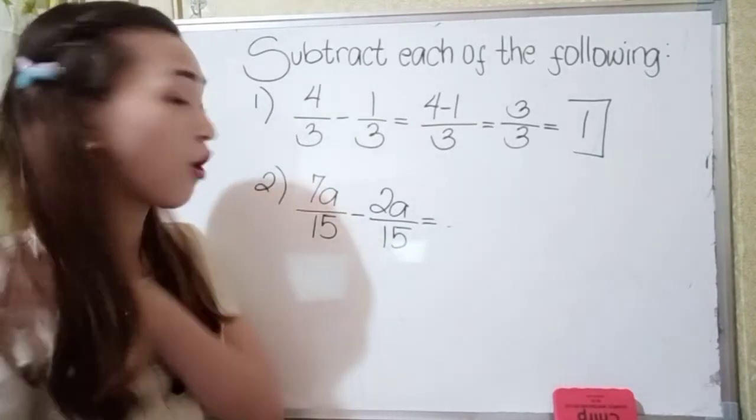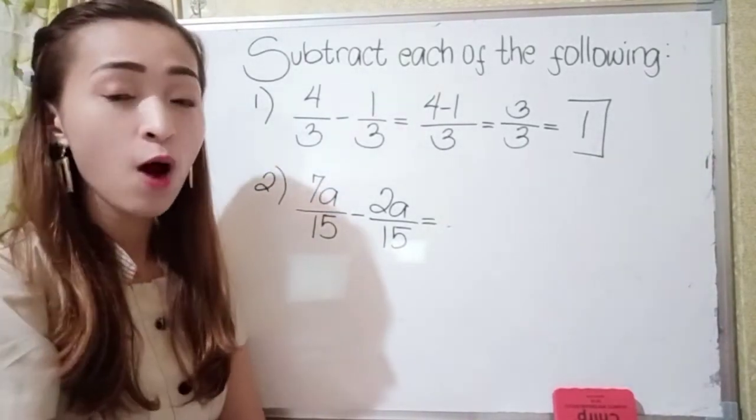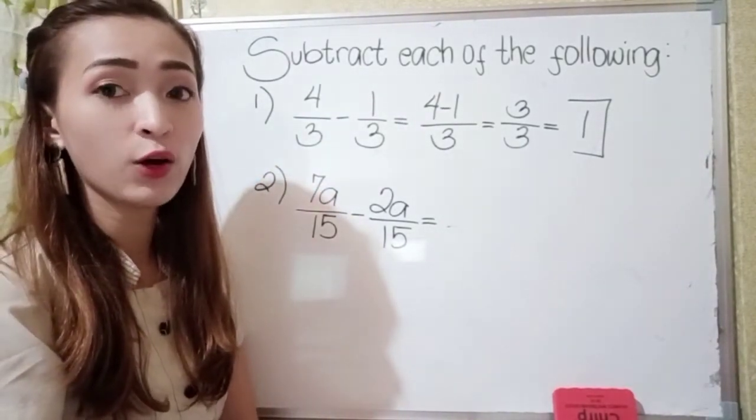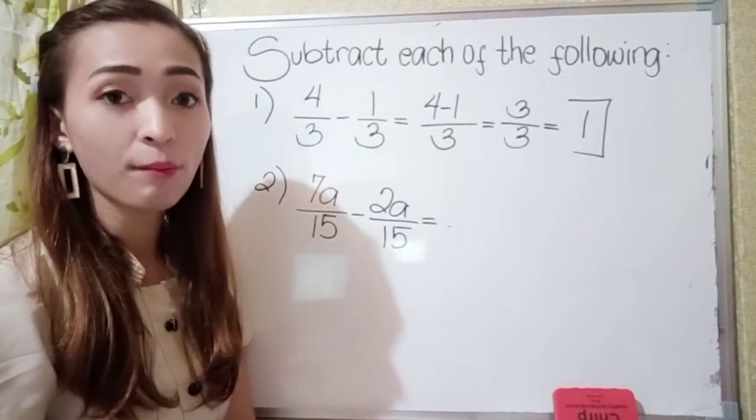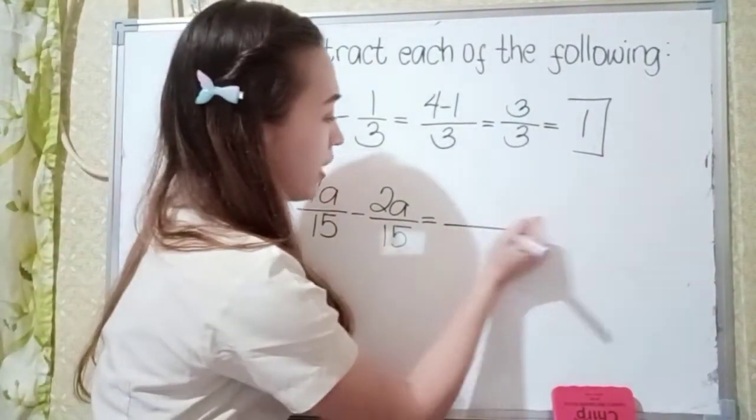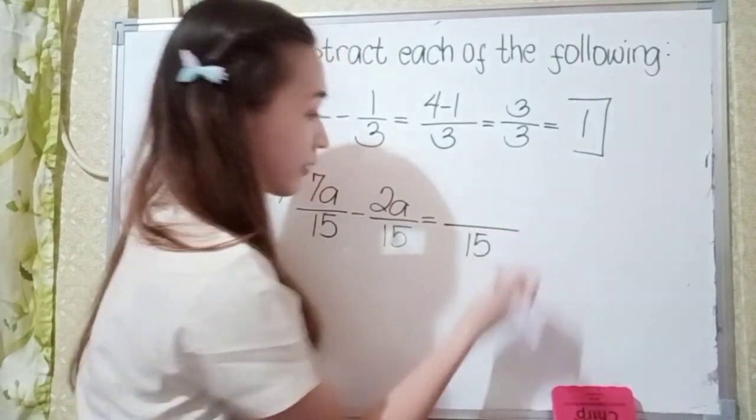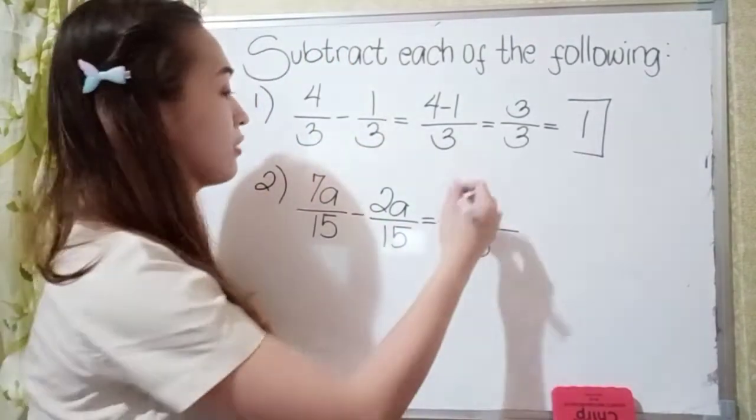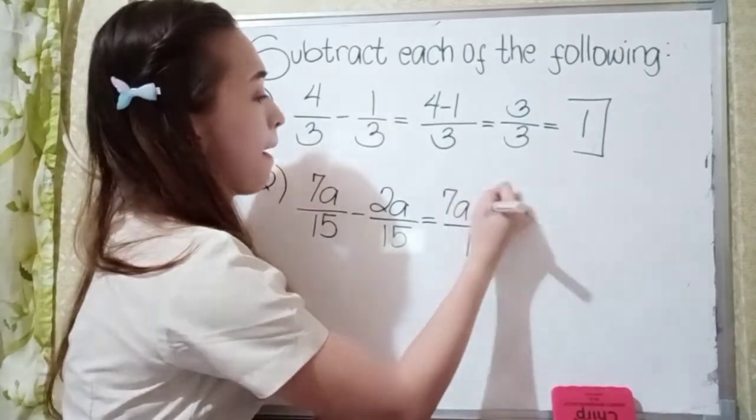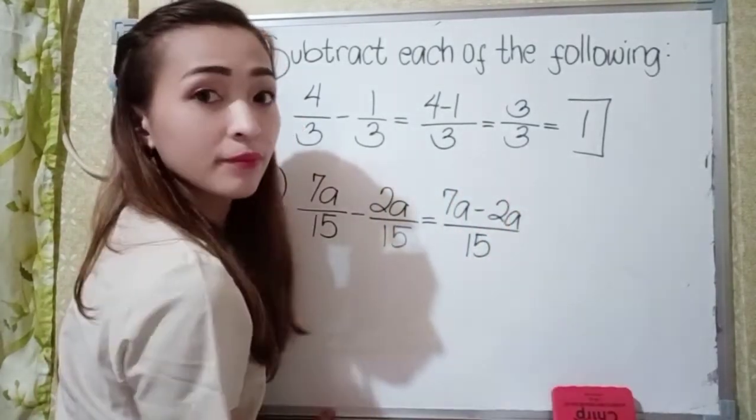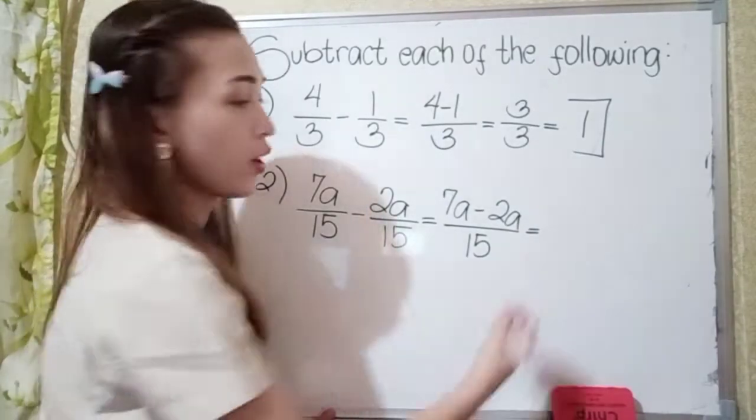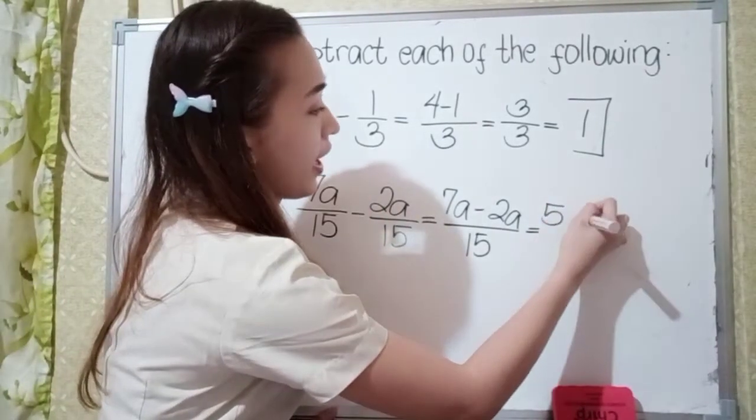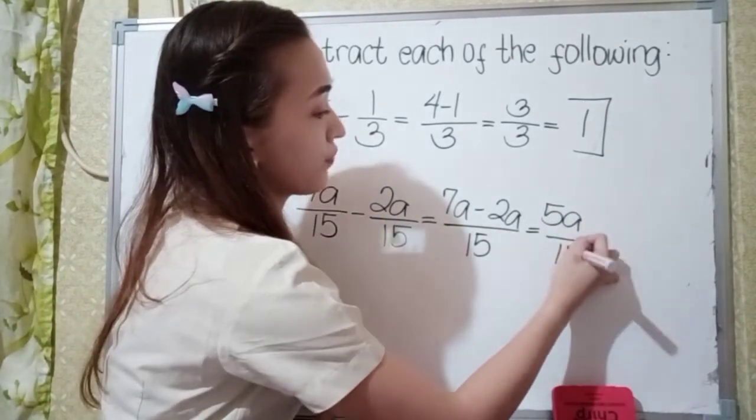Now we have here in number 2. So 7a over 15 minus 2a over 15. So again, they have the same denominator, so just write 15. Next is the numerator 7a minus 2a. So next, 7a minus 2a is 5a over 15.